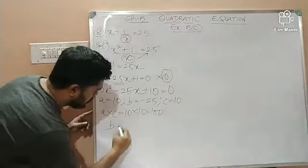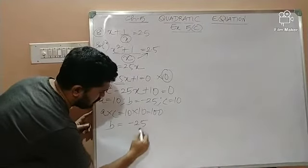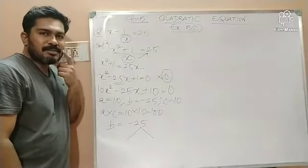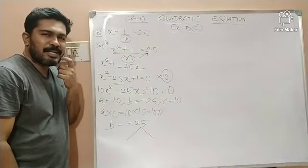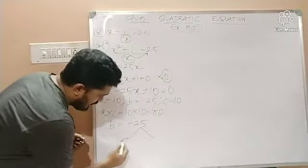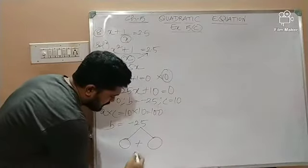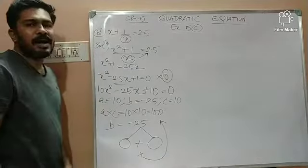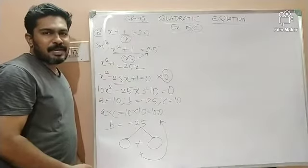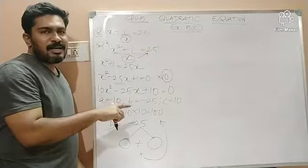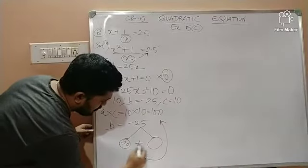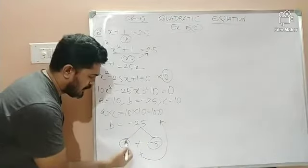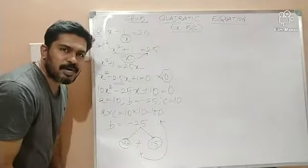Now, we will take the middle term, that is minus 25. Now, what is your job? To divide this minus 25 into 2 parts. Well, the sum of those two parts should be equal to minus 25 and the product of these two parts should be equal to what? Positive 100. Very easy. Minus 25 can be split into minus 20 and minus 5. Why? Because minus 20 plus minus 5 is what? Minus 25 and minus 20 into minus 5 is what? Positive 100.